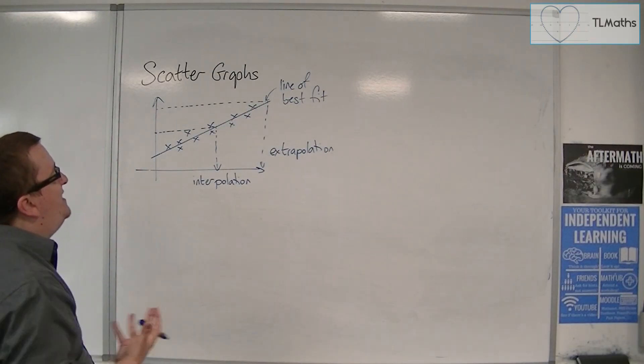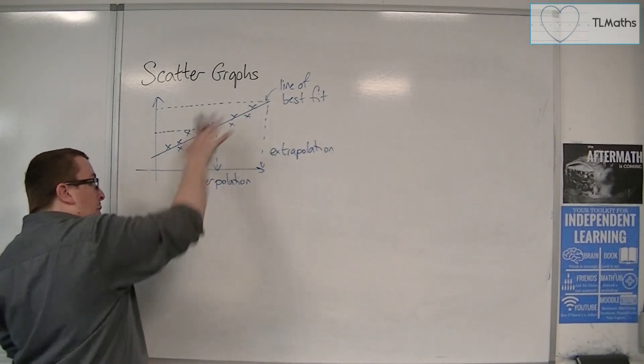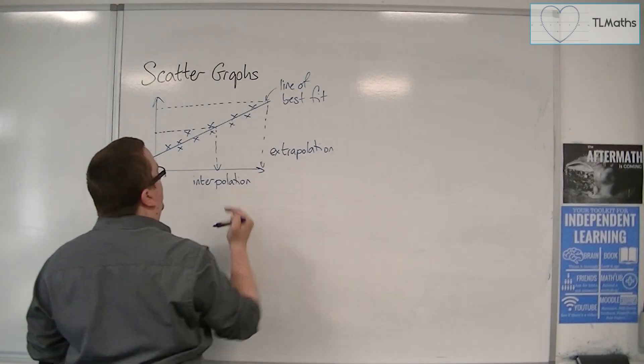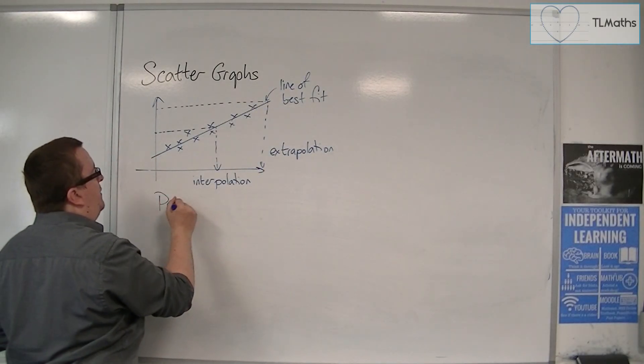So scattergraphs have these different sets of correlation. And this is an example because it's going in the positive direction. As one increases, the other is increasing. This is positive correlation.